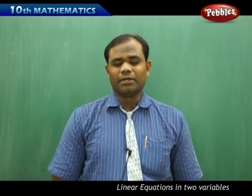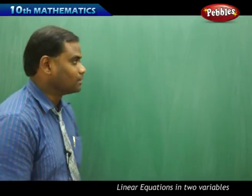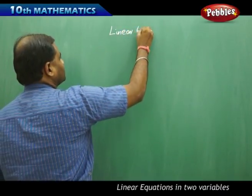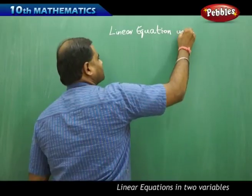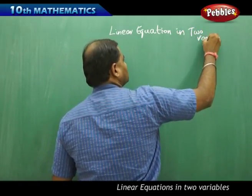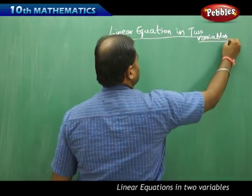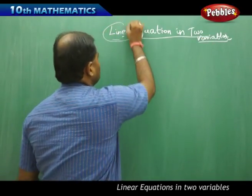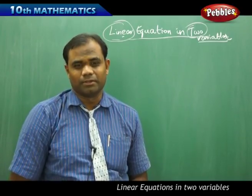Similarly, a linear equation in two variables is an equation which is linear and consists of two variables. The condition here is that the equation must be linear and must consist of two variables — that is what is defined as a linear equation in two variables.